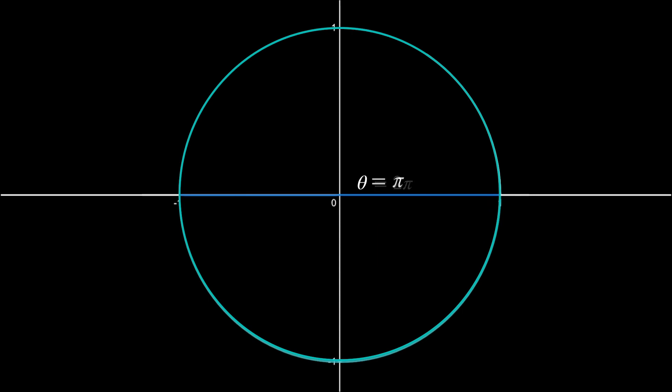Half the circle, pi radians. One fourth of the circle, pi over 2, and so on. For the rest of the video, I'll be using radians to measure angles.